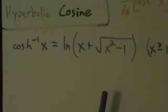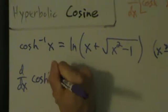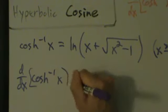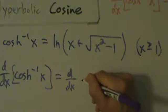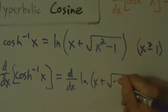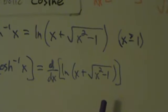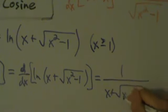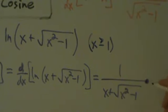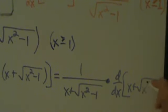We're going to proceed like we did in the previous video, skipping some details. So d/dx of inverse cosh of x equals d/dx of natural log of x plus root x squared minus 1. To take the derivative of this, we're going to use the chain rule. The chain rule says the derivative of the natural log of a thing is 1 over that thing times the derivative of that thing, so we multiply by d/dx of x plus root x squared minus 1.